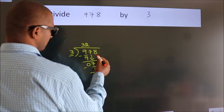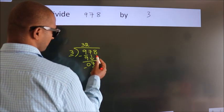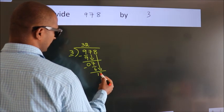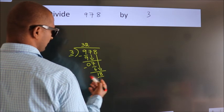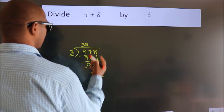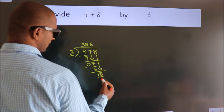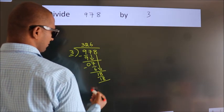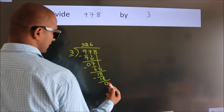After this, bring down the beside number. So 8 down, giving us 18. When do we get 18 in the 3 table? 3 × 6 = 18. Now we subtract. We get 0.